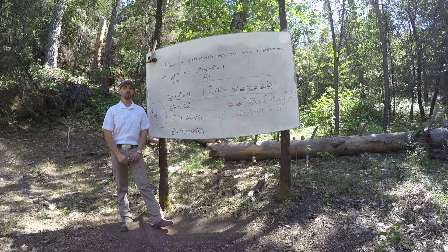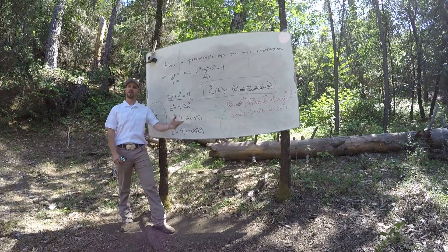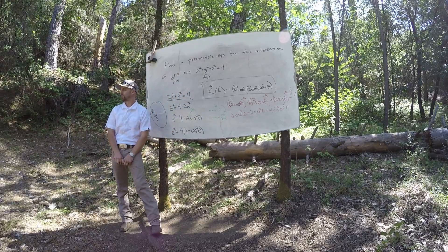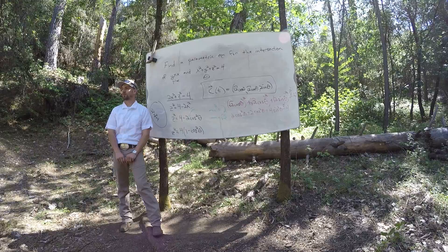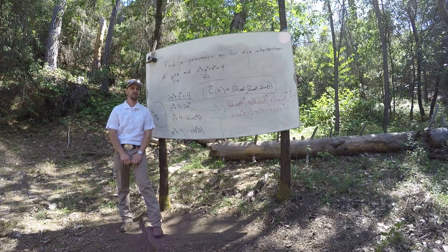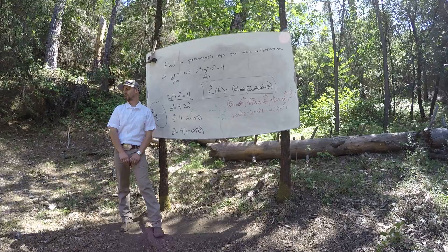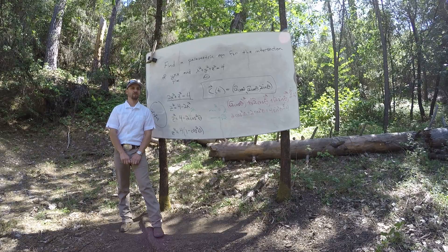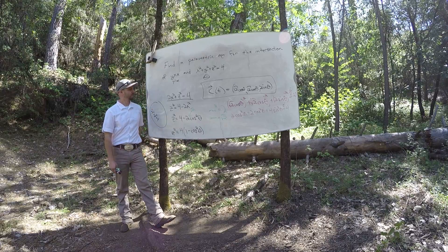If you want to just go around it once — how many times does this thing go around the circle? Infinitely many. If I only want to go around it once, probably 0 to 2π. So that's theta from 0 to 2π.